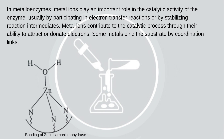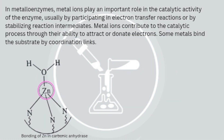Let's look at an example. Carbonic anhydrase is a metalloenzyme consisting of zinc as its metal ion. The zinc ion lies in a deep pocket created by a coiled apoenzyme and is coordinated by three nitrogen atoms. Carbonic anhydrase is an example of a metalloenzyme that is faster than an enzyme without a metal ion in its active site, as the zinc ion greatly accelerates the rate of the reaction it catalyzes.